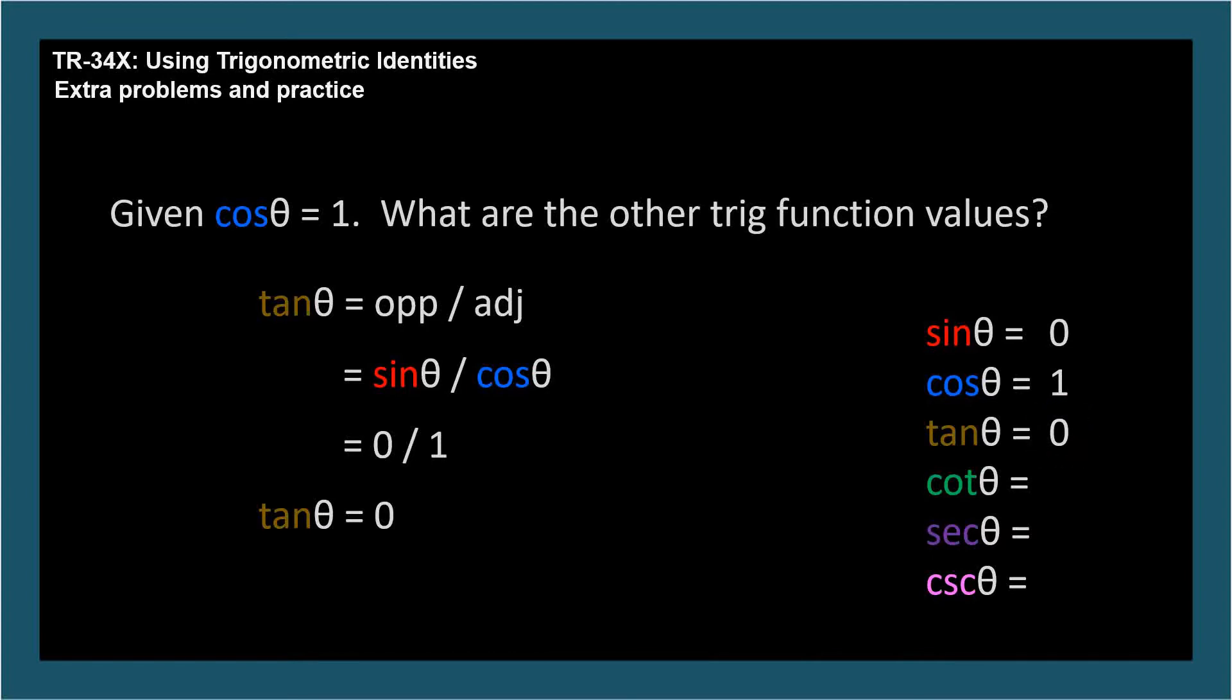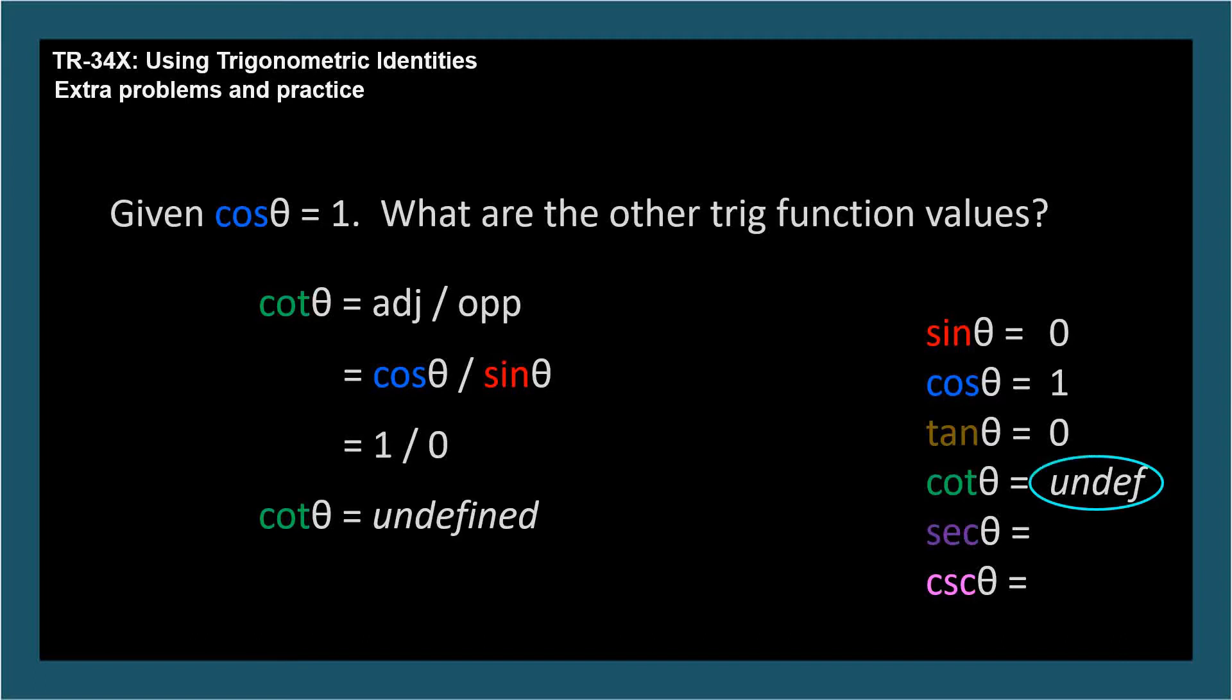Cotangent is the reciprocal of tangent, adjacent over opposite, which corresponds to cosine over sine. For angle theta, this is 1 over 0. This is an undefined fraction, since we're trying to divide by 0, so the cotangent of this angle is undefined. This will happen at the quadrantal angles, where either sine or cosine is 0, yielding ratios with 0 in the denominator.